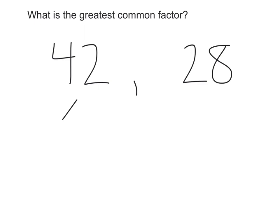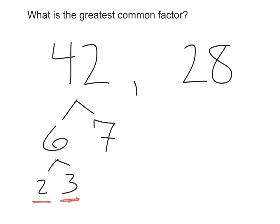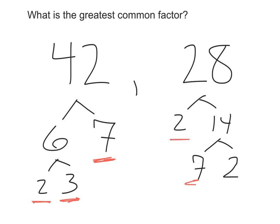I can break down 42: 42 is going to be 6 times 7, and 6 can be broken down to 2 and 3. Then I'm taking these prime numbers and comparing them to the prime factors of 28. If I break down 28, I can get 2 and 14, and 14 can be 7 times 2. So here are my prime factors of 28: 2, 7, and 2.